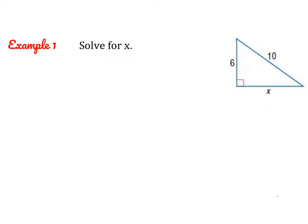One thing we can use the Pythagorean Theorem for is finding missing sides of a right triangle. It does have to be a right triangle, so please don't forget that.